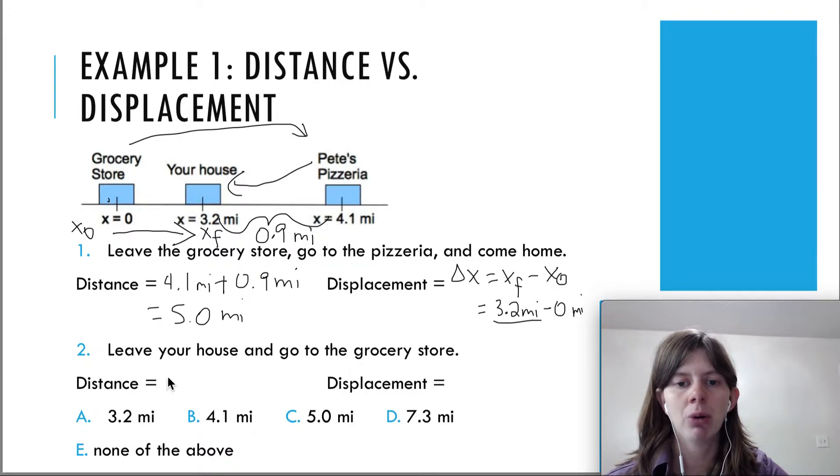And now let's do example two. You leave your house and you go to the grocery store. So let's take a look here. You're going from your house to the grocery store. So you're going from 3.2 miles to zero here.